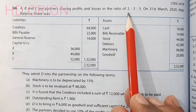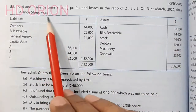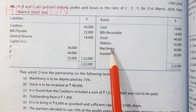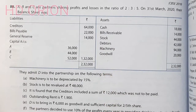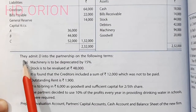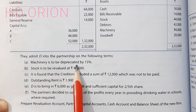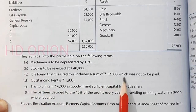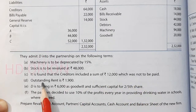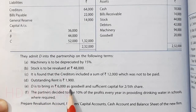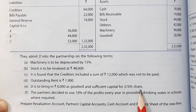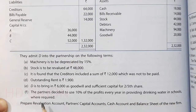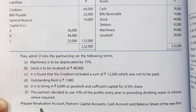A, B, and C are partners sharing profits and losses in the ratio of 2:3:5. On 1st April 2020, their balance sheet shows — on the liability side: creditors, bills payable, general reserve, and capital; on the asset side: cash, bills receivable, stock, debtors, machinery, and old goodwill. They admit D into partnership. Machinery is to be depreciated by 15%, stock is to be valued at ₹48,000, creditors include ₹12,000 not to be paid, outstanding rent is ₹1,900, and D is to bring ₹6,000 as goodwill and sufficient capital for a two-fifths share. Partners decide to use 10% of profit every year for providing drinking water in schools.